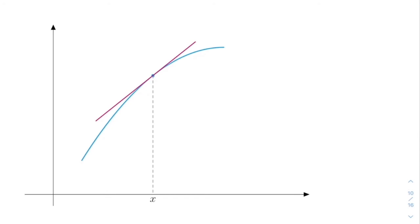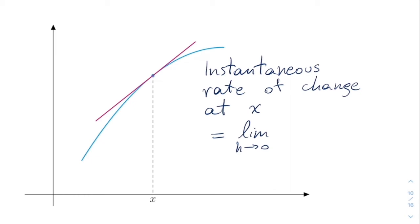So now as we make h smaller and smaller we will get the following. The instantaneous rate of change at x will be equal to the limit when h goes to zero of the average rate that we've been forming before. So it will be f of x plus h minus f of x divided by h.